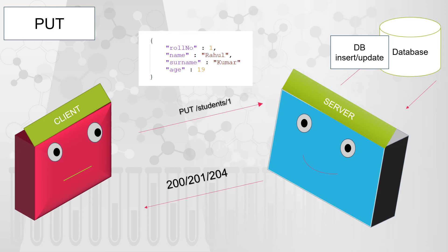The bottom line is PUT is used for complete replacement — there is no partial update, because partial update is handled by PATCH which we will discuss shortly. PUT is idempotent, meaning if you send the same PUT request again and again you are going to get the same response. Lastly, PUT is not safe because it alters the state of the resource on the server side.